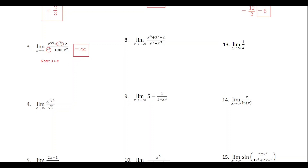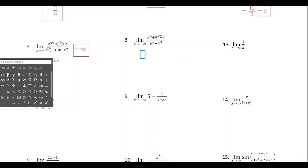For number eight, x is approaching negative infinity, so the exponential terms go to zero — we can ignore them and just look at the remaining polynomial terms. On top we've got degree six and on the bottom degree five. When the degree on top is larger than on the bottom, the numerator will increase more quickly. As x approaches negative infinity with an odd-degree leading term, the value of this function approaches negative infinity.